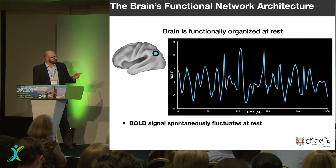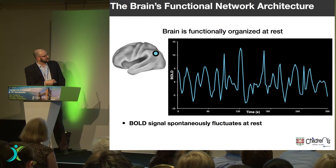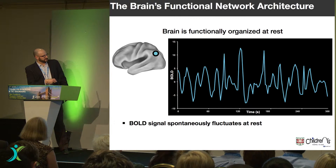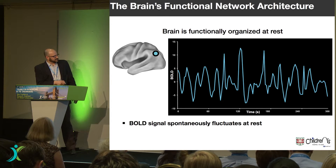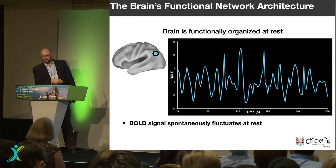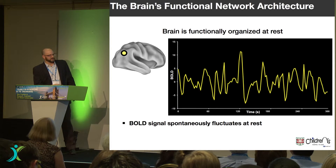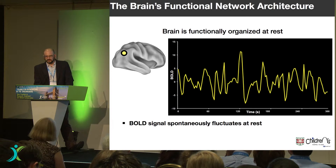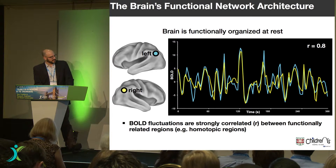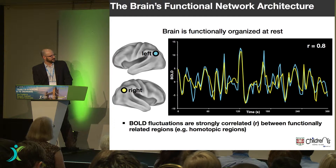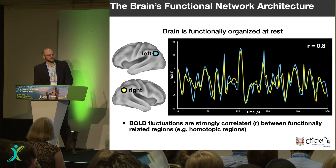The way we've approached this in recent years is using resting state functional connectivity MRI. The idea is that at rest there is this spontaneous fluctuation of BOLD signal — this is five minutes of data on the x-axis from a region in the left parietal lobe. This looks like noise; it's really spontaneous fluctuation, not a true oscillation. But if you look at the homotopic region in the right hemisphere, you get a very comparable signal. If you overlay the two, you notice the temporal correlation is quite high — the Pearson's R shown in the upper right corner of 0.8 is an indication of strong functional relatedness between these two regions. That's the metric we call functional connectivity.